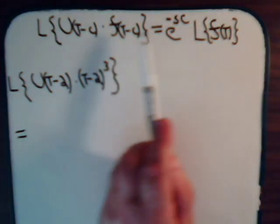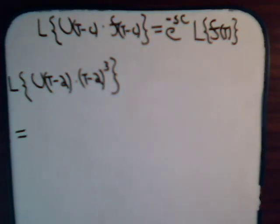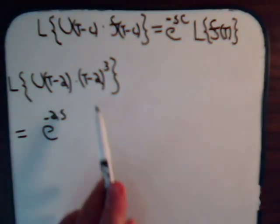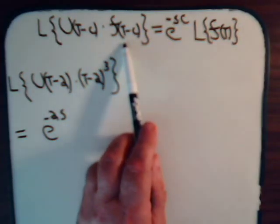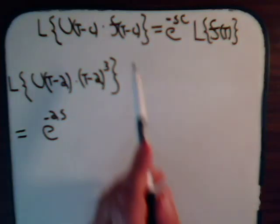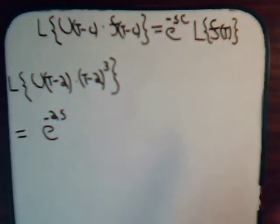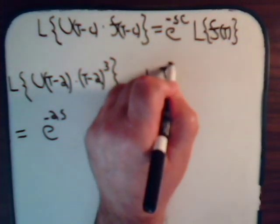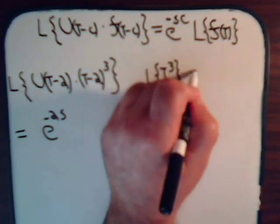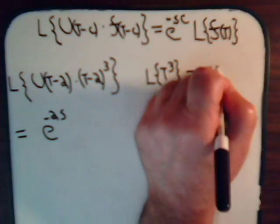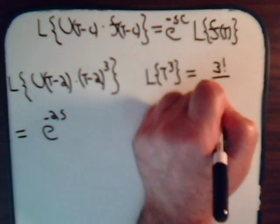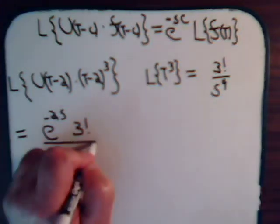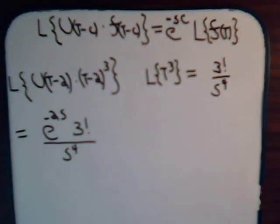So, minus c — c is 2 — so we're going to have e to the minus 2s. And then for this part of the formula, it's not the Laplace transform of f(t-c), but just simply the Laplace transform of f(t). So here we want the Laplace transform of t cubed, and we know that is going to be equal to 3 factorial divided by s to the fourth.